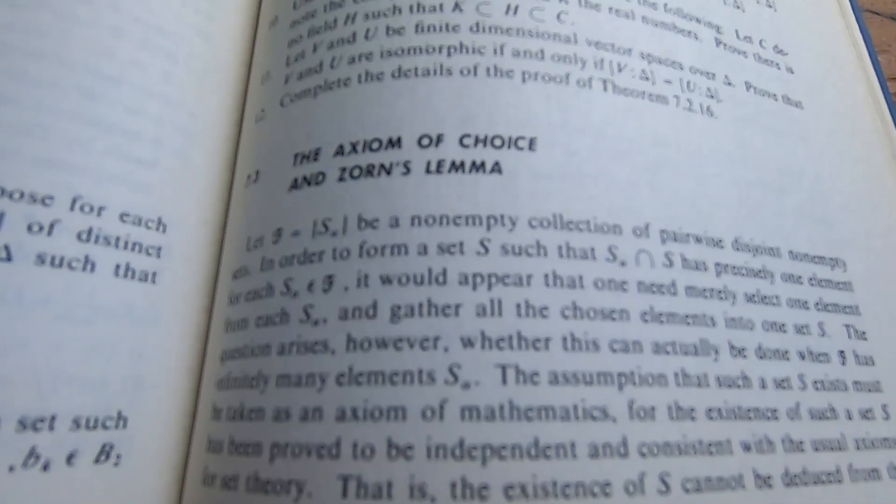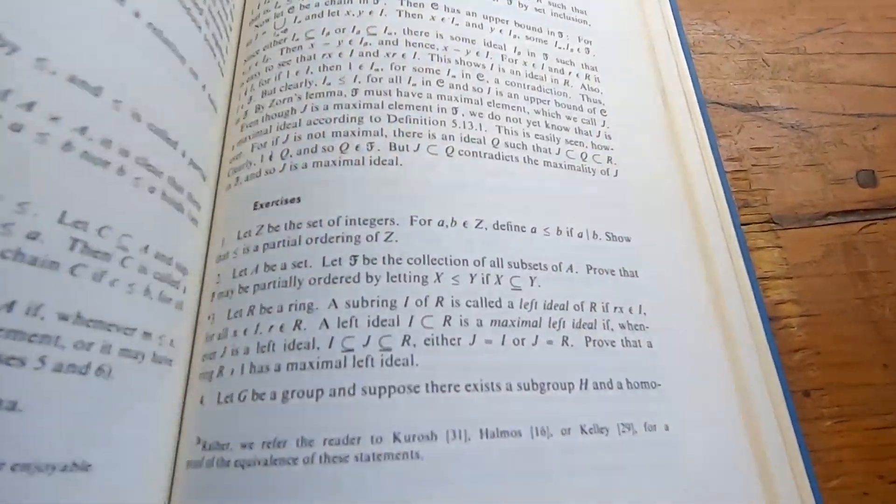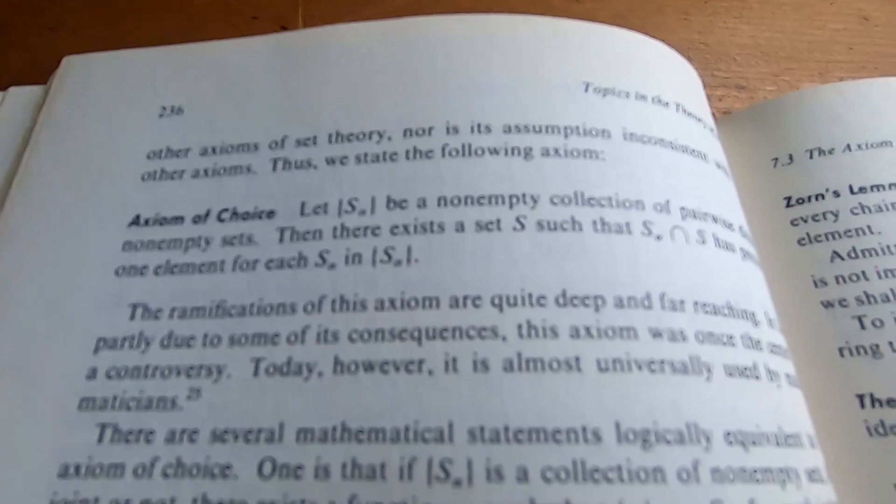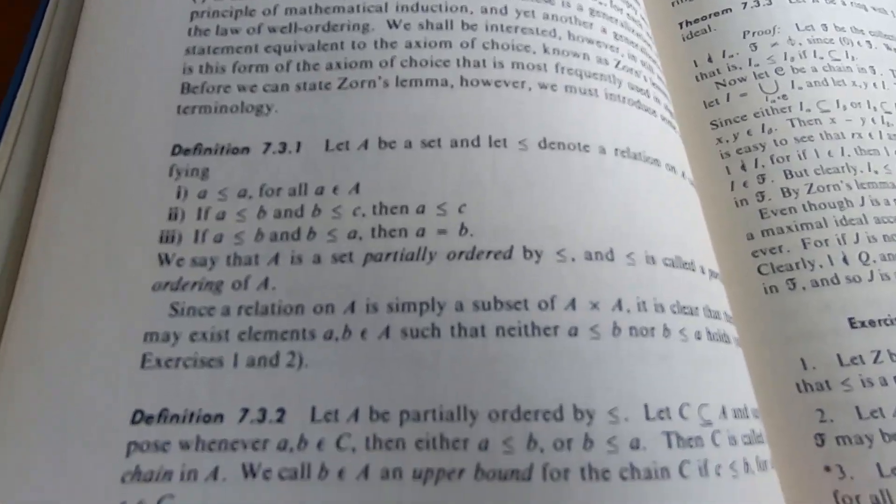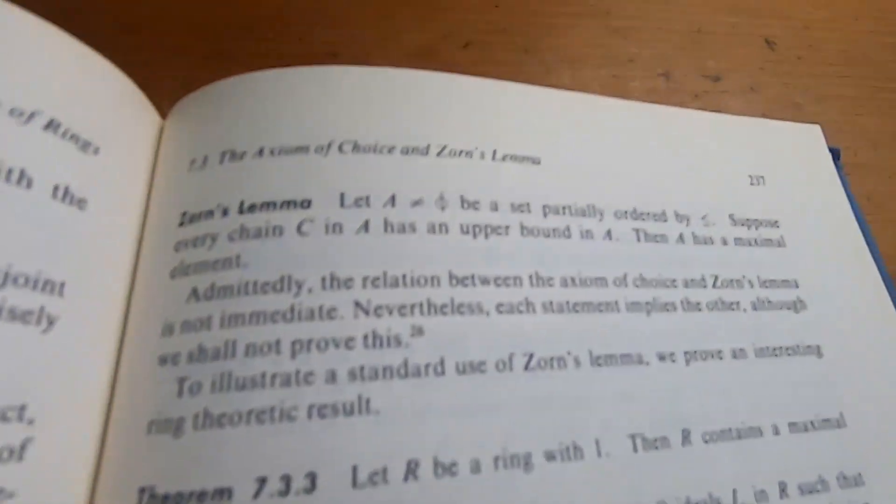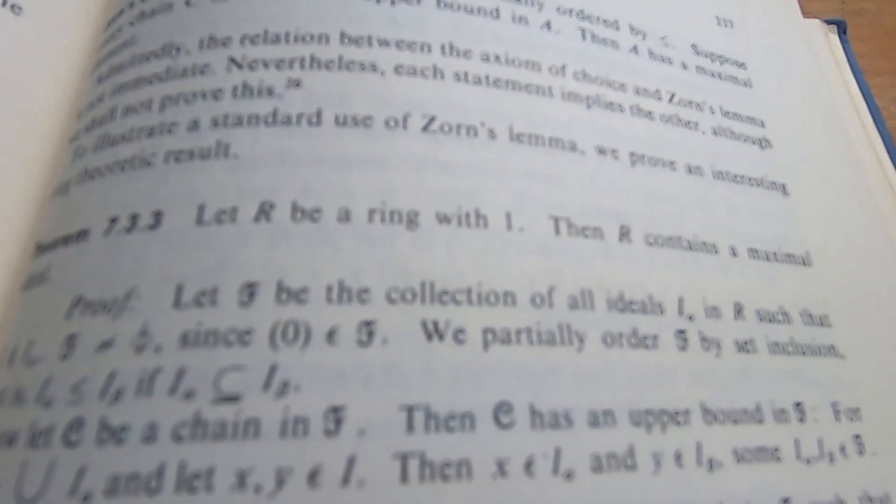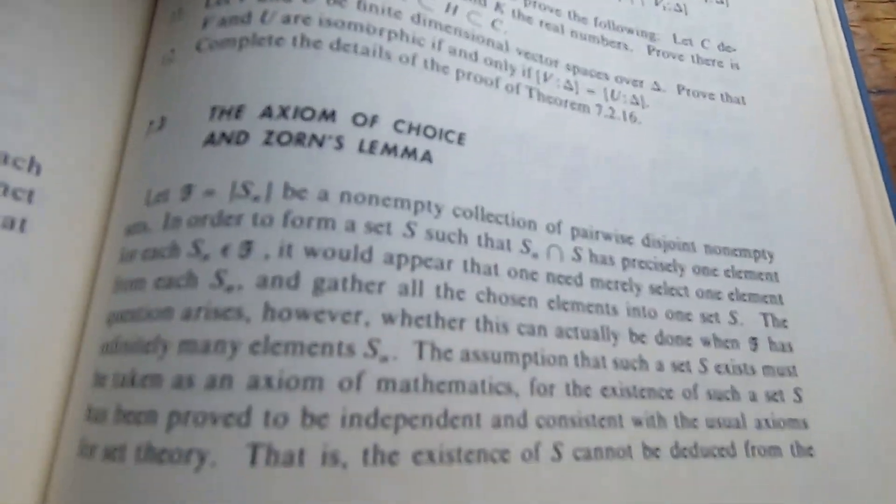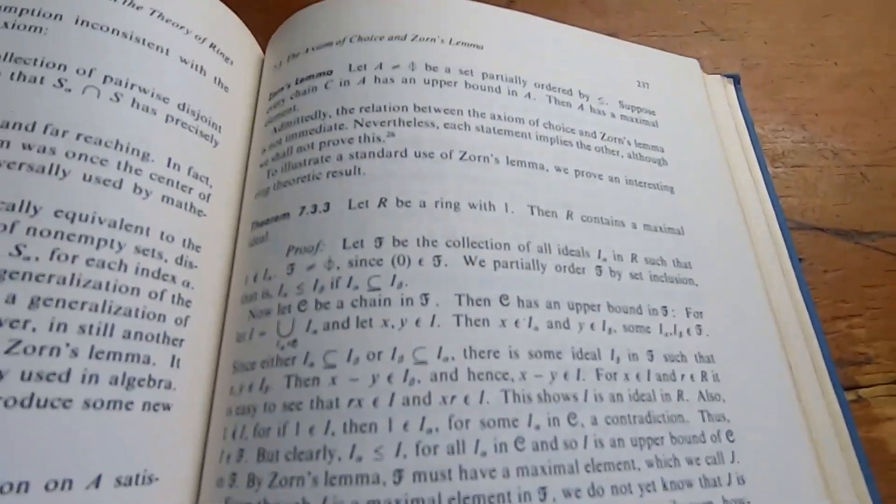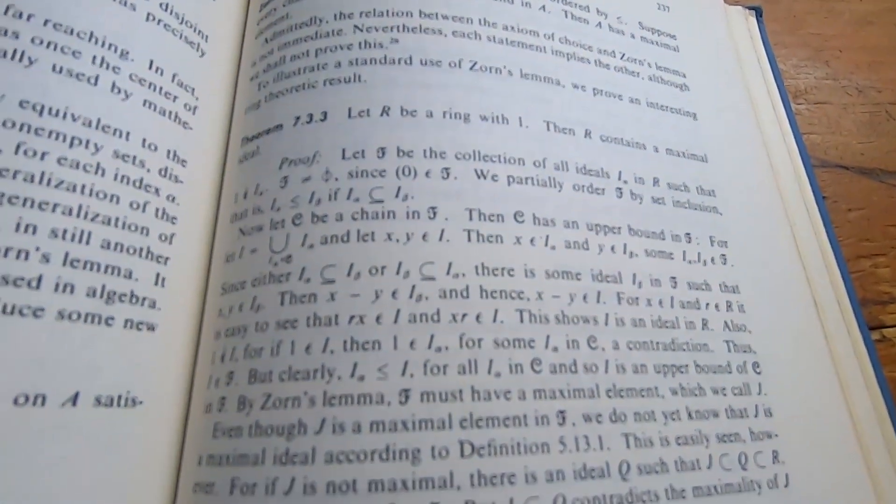The book also has a nice treatment of the axiom of choice and Zorn's lemma. So, that's kind of cool. This is where it starts. Let me turn the page so you see. Then it has the axiom of choice. It defines a partial ordering. And then it states Zorn's lemma for you. And then it proves the following. Let R be a ring with one. Then R contains a maximal ideal. So, it gives you everything in not even two pages if you count the one before this one. Because this is just a little piece here. So, you have a little piece here, a full page here, and a three-fourths of a page here. So, in two pages, you have the axiom of choice, the definition of a partial ordering, Zorn's lemma, and a proof. So, really concise, really nice treatment.